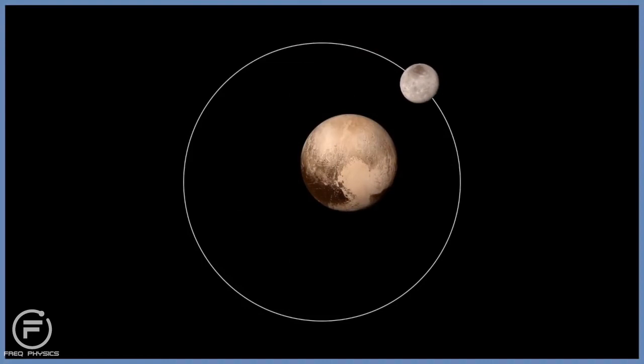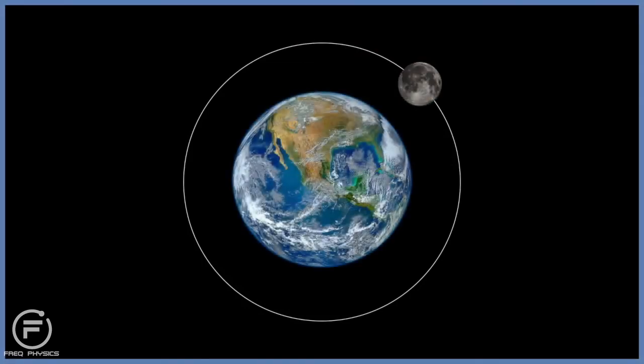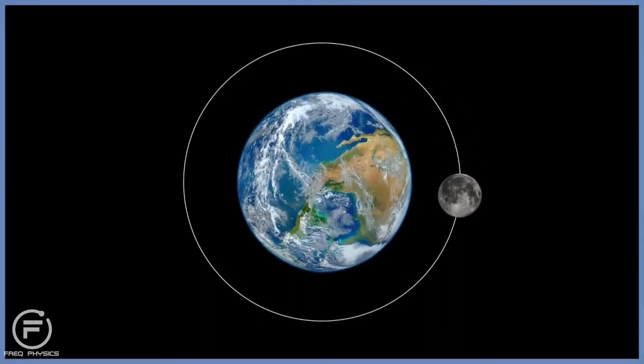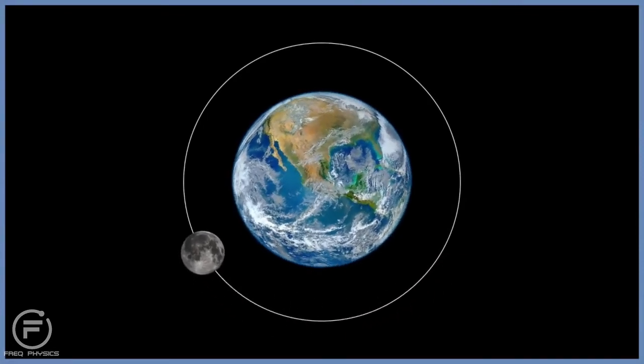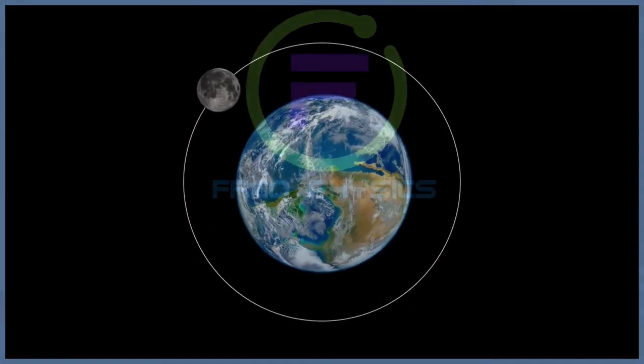But this friction does not only affect moons and small planets, it can affect larger planets, just like the earth. Just as the earth exerts a friction spin on the moon, the moon exerts a friction spin on the rotation of the earth. As such, the length of the day increases by a few milliseconds every century.